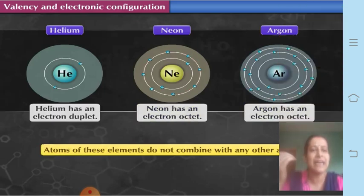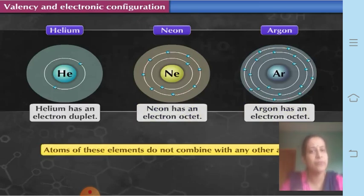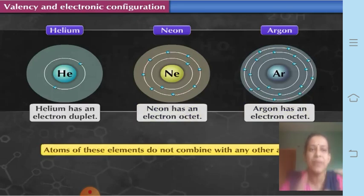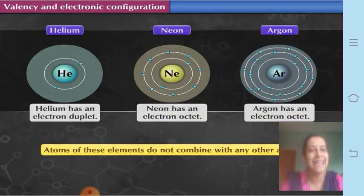Since they do not combine with any other element, they do not form compounds. Have you ever heard of a compound called helium chloride or neon bromide? No — because they cannot combine with any other element. They have a stable state, and every atom has to attain a stable state. All three of them have a stable state by having the completely filled outermost shell — the valence shell — and therefore they do not require to take, give, or share any electron.